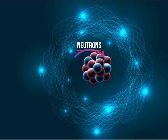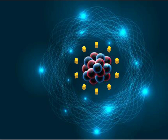The nucleus also contains another type of subatomic particle called neutrons. Neutrons have no charge. Both protons and neutrons help keep balance in the center of the atom.